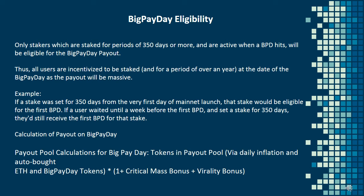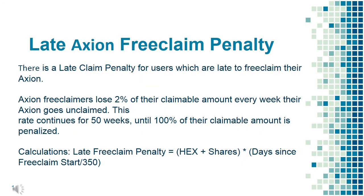Calculation of payout on Big Payday: the payout pool is calculated from tokens via daily inflation, auto-bought ETH, and Big Payday tokens, multiplied by (1 + critical mass bonus + virality bonus). Late Axion Free Claim Penalty: there is a late claim penalty for users who are late to free claim their Axion. Free claimers lose 2% of their claimable amount every week their Axion goes unclaimed. This continues for 50 weeks until 100% of their claimable amount is penalized. The formula is: HEX shares × (days since free claim start / 350).